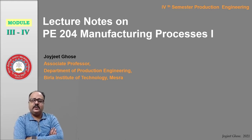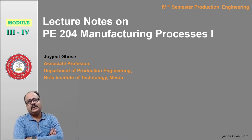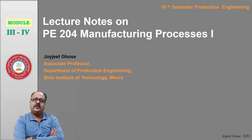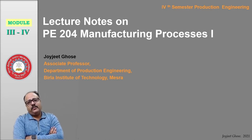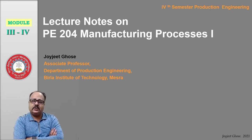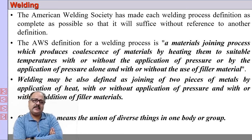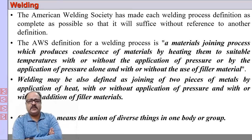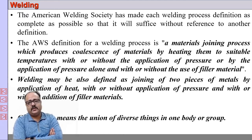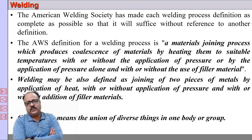What is welding? Welding is basically a joining process. There can be various types of joining processes — riveted joints, soldered joints, brazed joints, bolt and nut joints. In this lecture series, we will discuss welding, which is a very important aspect of manufacturing. The American Welding Society defines welding as a material joining process which produces a coalescence of materials by heating them to a suitable temperature, with or without application of pressure, or by application of pressure alone, and with or without use of filler materials.